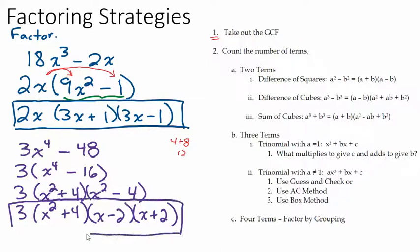We got it down to four different factors: 3, x squared plus 4, x minus 2, and x plus 2.